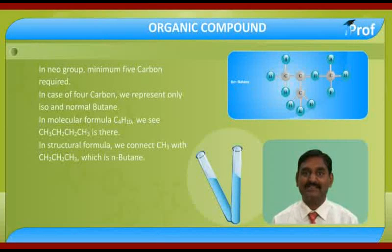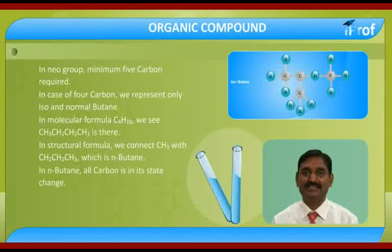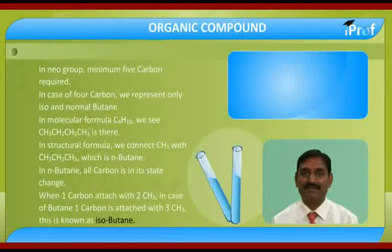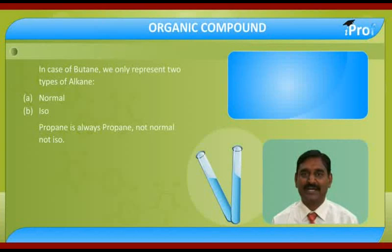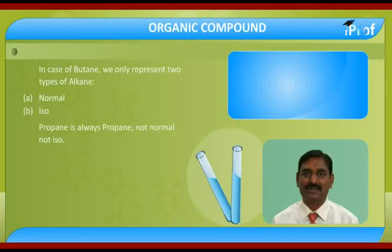In normal butane, when we connect CH3 with CH2, CH2, and CH3, this is normal butane — all carbons in a straight chain. When one carbon is attached with three CH3 groups, this is known as isobutane. In the case of butane, we represent only two types of alkane: normal and iso. For simple butane, we do not say normal or iso — butane is always just butane.